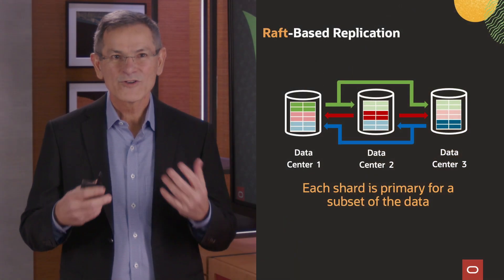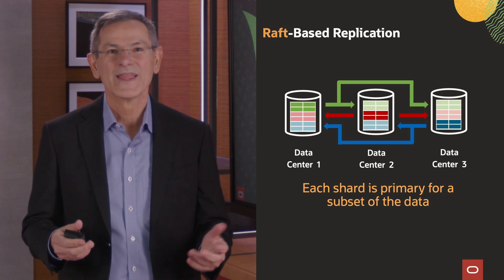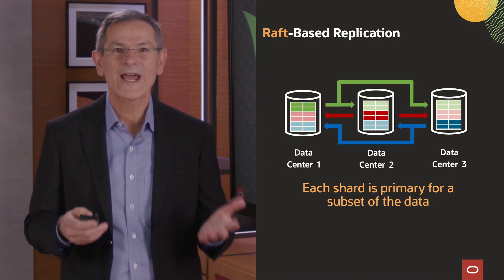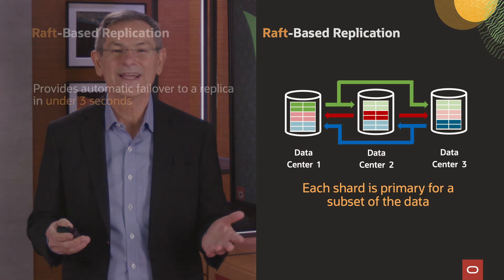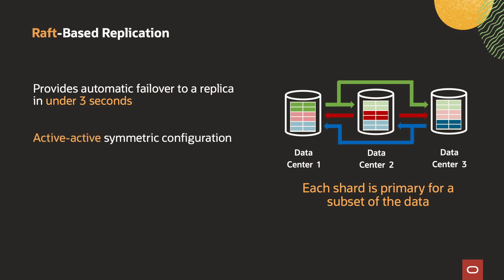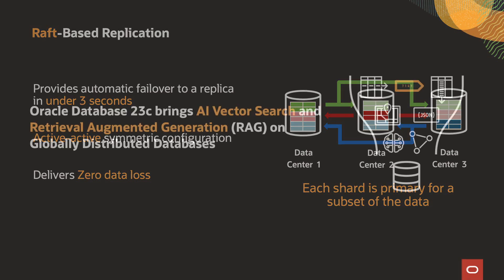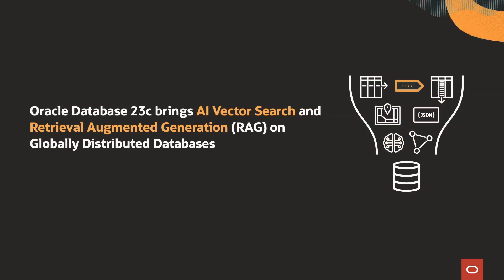Now I want to tell you about a few features coming soon in Oracle Database 23c. First, raft-based replication for extreme survivability is coming soon. It's a new replication method that uses the popular raft quorum-based replication protocol to provide automatic failover to a replica in under three seconds. It implements an active-active symmetric configuration where each shard accepts writes and reads for a subset of the data, delivering zero data loss using high-performance synchronous replication across shards. Also coming is AI vector search and RAG on globally distributed database 23c — Oracle distributed database will add hyperscale and data sovereignty features to Oracle Database 23c AI vector search and to retrieval-augmented generation, enabling customers to combine similarity search using AI vectors with search on business data about customers and products in a single distributed query.